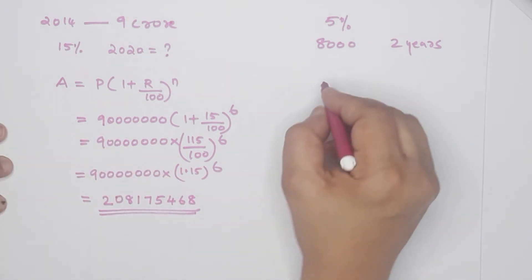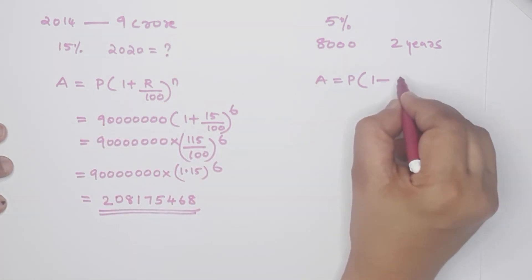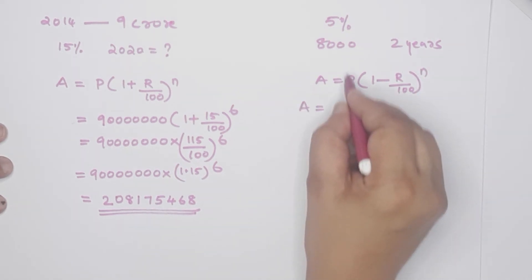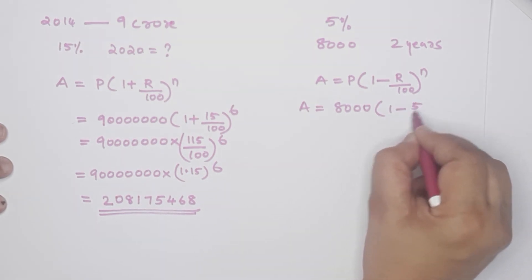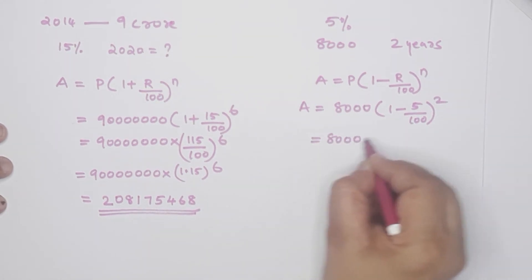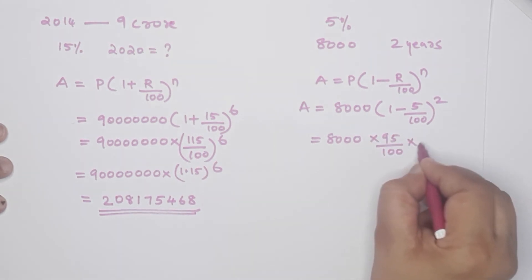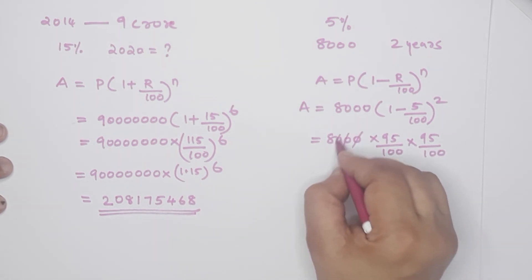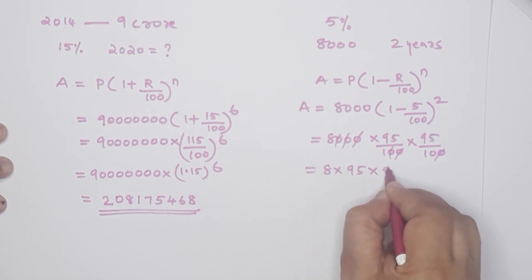Same formula, but for decrease: A is equal to P into 1 minus R by 100, whole raise to N. Here it is minus. So: 8000 into 1 minus 5 by 100, whole raise to 2. That is 8000 into 95 by 100, whole raise to 2. We cut and simplify: 8 into 95 into 9.5.